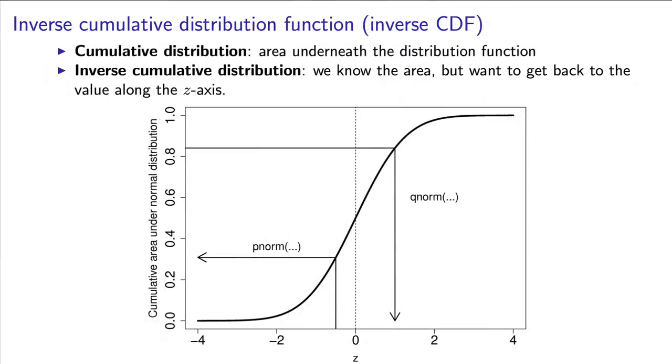To answer this question, we need the cumulative and inverse cumulative distribution. The cumulative distribution was found using the p-norm function in R, when we know the z-value and we want to find the area.